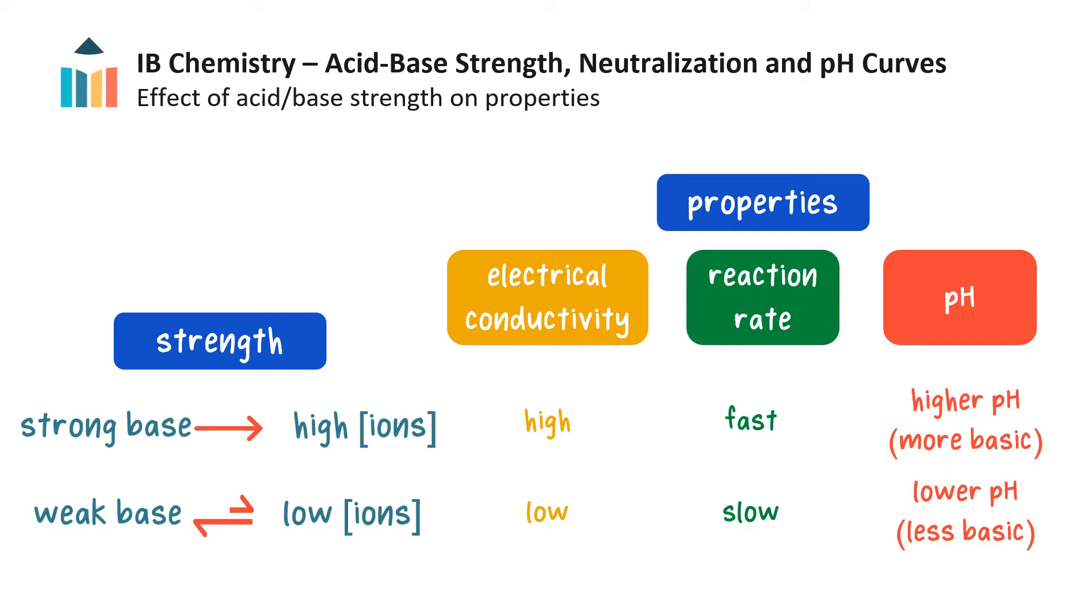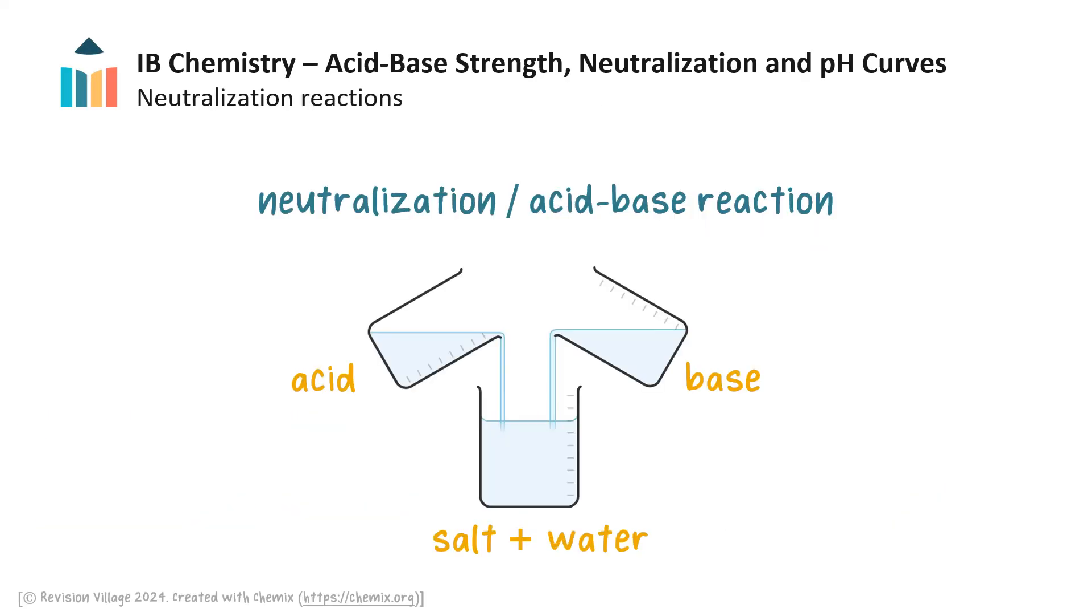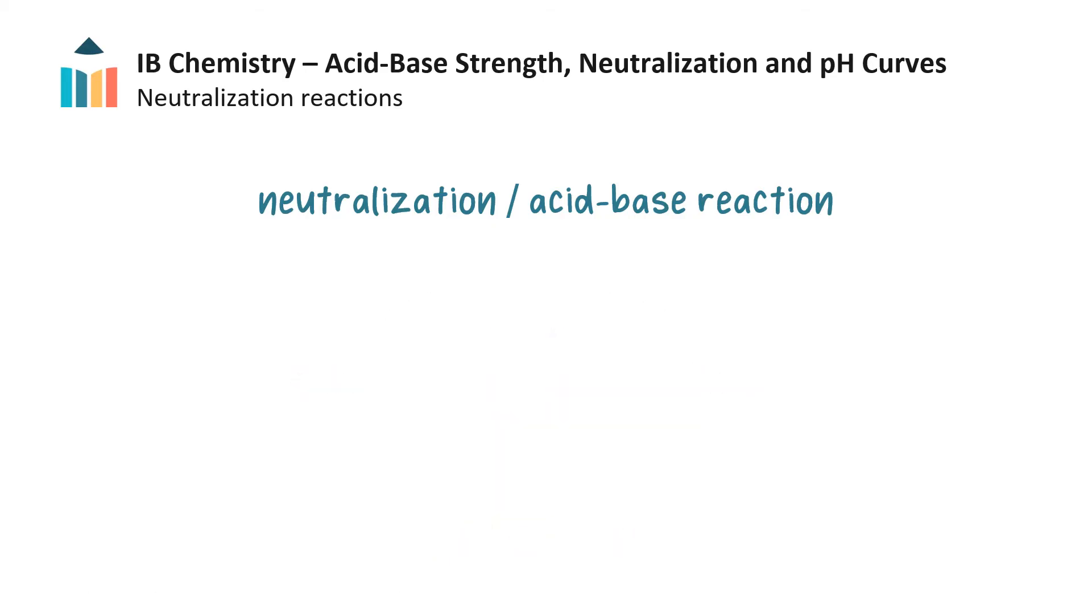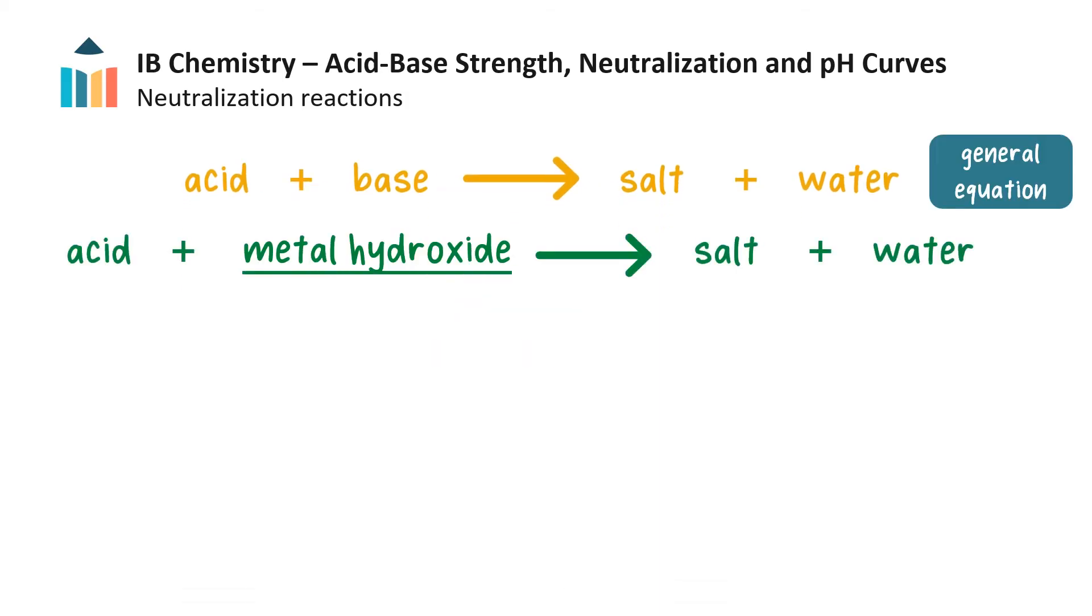When an acid and a base react, an acid-base reaction, also called a neutralization reaction, occurs, forming a salt and water as products. These reactions are exothermic. The base can be a metal hydroxide. The hydroxide ion from the base combines with the hydrogen ion from the acid to form water. And the anion from the acid combines with the cation from the base to form a salt.